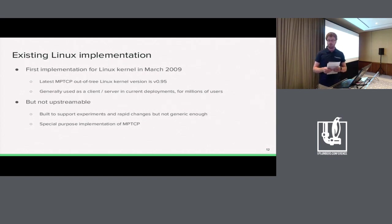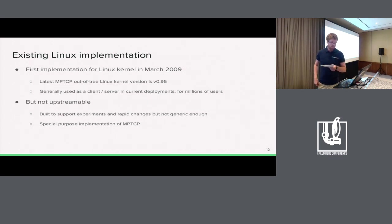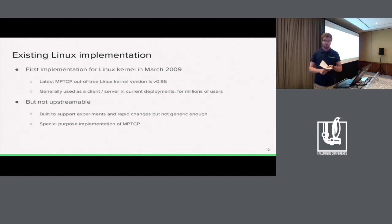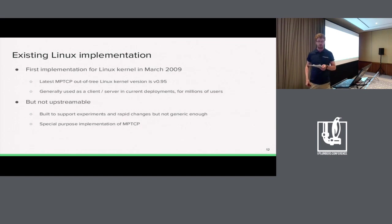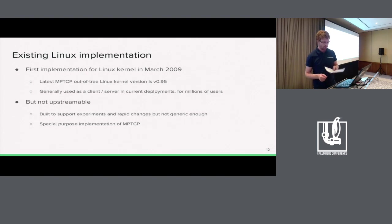Multipath TCP is part of 5G but there is no implementation in the Linux upstream kernel. The 3GPP has selected multipath TCP as a major protocol. An out-of-tree implementation has existed since March 2009 — the last version is v95, generally used as a client-server in current deployments and used by millions of users. The problem is that it's not upstreamable: it was built to support experiments and rapid changes, but is not generic enough.